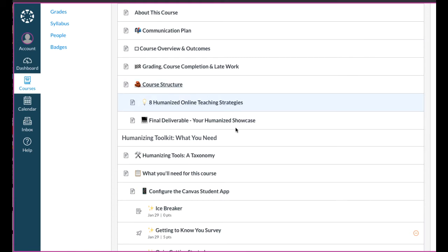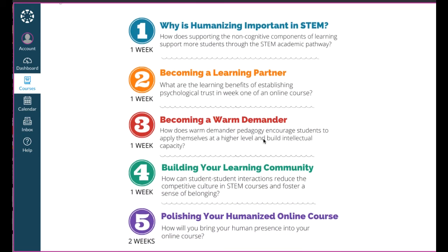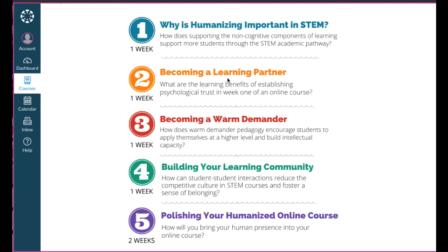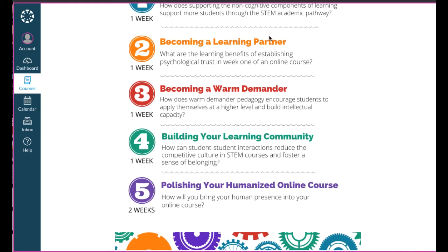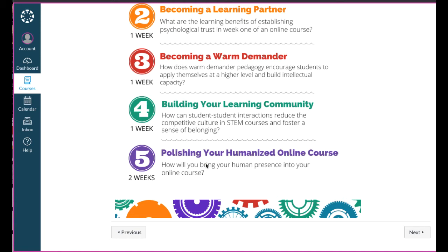This course structure page shows how the course is organized. There are five modules — each one is one week, and the last one is two weeks — and it takes participants through the topic of each module. The first module covers research behind STEM equity gaps and the reasons those gaps point to the need to support the affective part of learning more effectively online. After that, participants go through several modules introducing culturally responsive teaching theory, building trust, becoming a learning partner, a warm demander, and building community online. Throughout these modules, they work on different practices that they polish in the last module and share in an online showcase under a Creative Commons license.